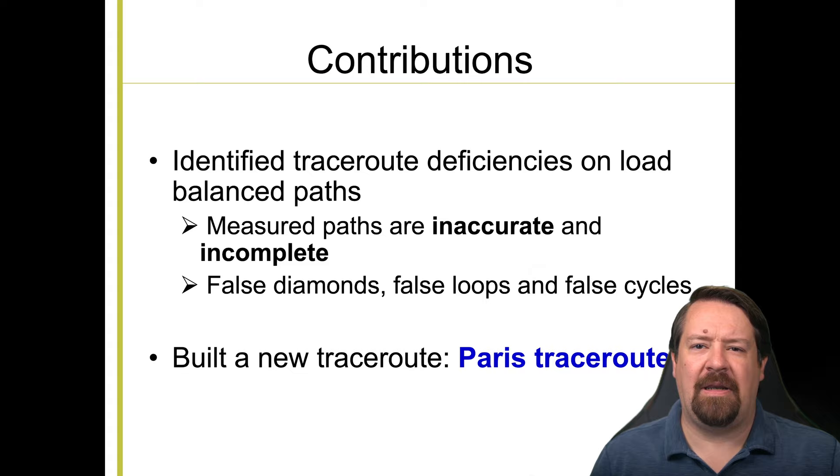In particular, we may observe what are called diamonds, loops, or cycles that don't in fact exist in the network, and the improved version of Traceroute presented in this paper helps eliminate some of these artifacts.